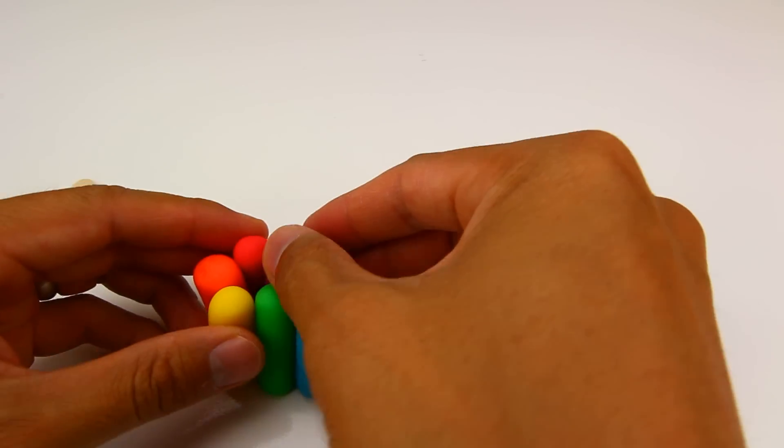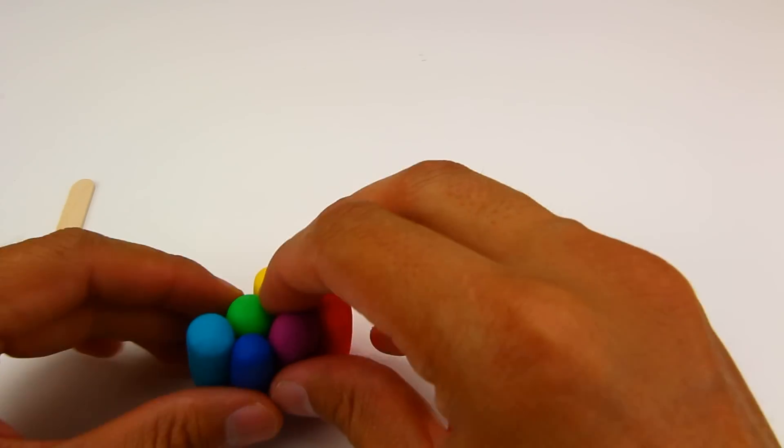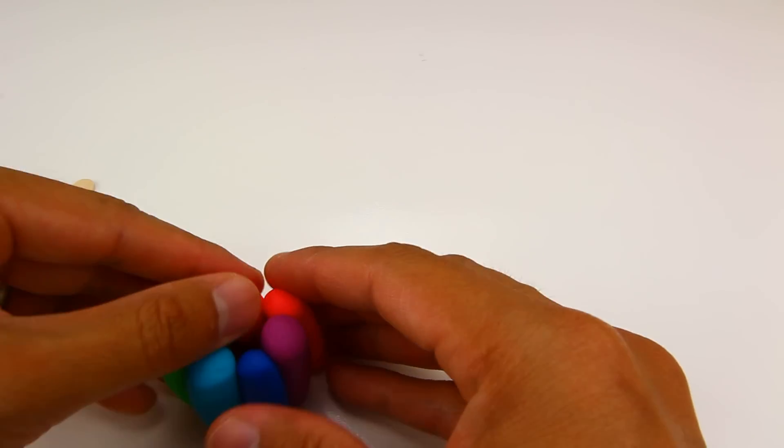Okay, and now we want all the colors of the rainbow to show in our popsicle so we have to carefully press together.